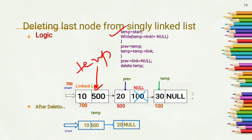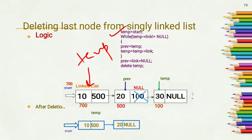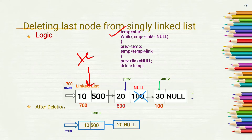Now temp contains the address of the first node, that means 700. We want to move this temp pointer to the last node. We know that in a singly linked list the last node's link part contains null, so while temp->link is not equal to null, we move temp to the next node. When we get null in temp->link, we stop the loop.